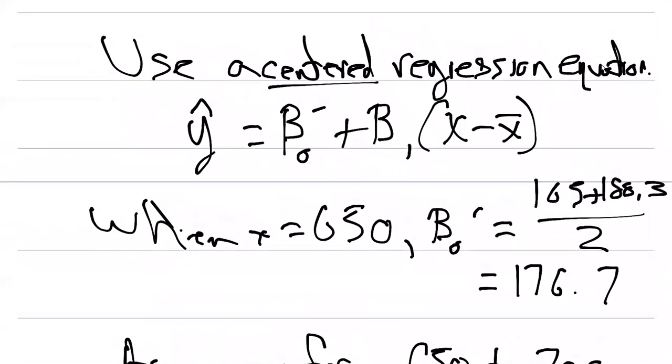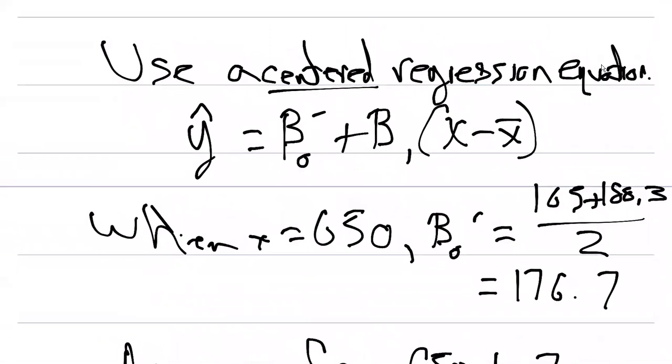So we can say when x is 650, beta zero prime is going to be the average of the two yields at $600 and at $700 per acre. And so the average yield then would be 176.7 bushels per acre.